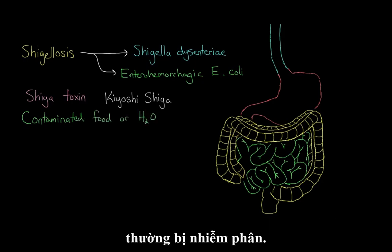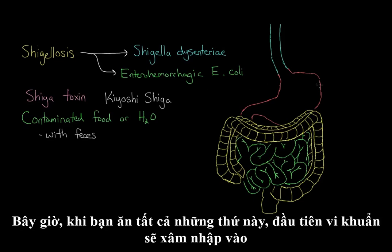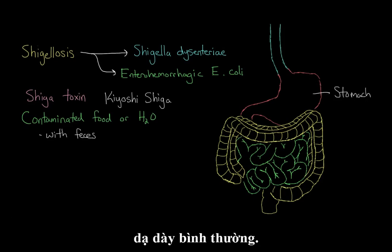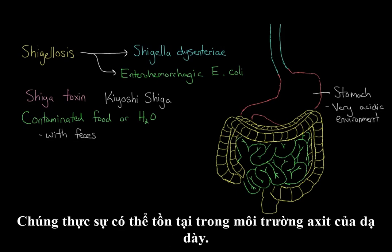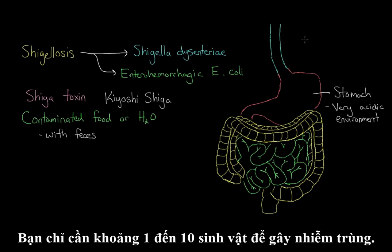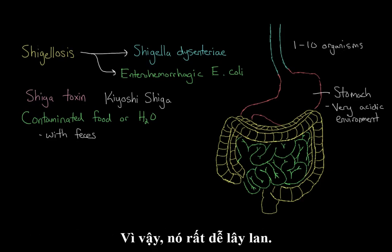People usually contract the infection when they eat some kind of contaminated food or water, and it's usually contaminated with feces. When you eat this, the bacteria will first enter your stomach. Ordinarily the stomach has a very acidic environment, but these bacteria are very sturdy — they can actually survive past the acidic environment of the stomach. In addition to this, you only need about 1 to 10 organisms to cause an infection, so it's very infectious.